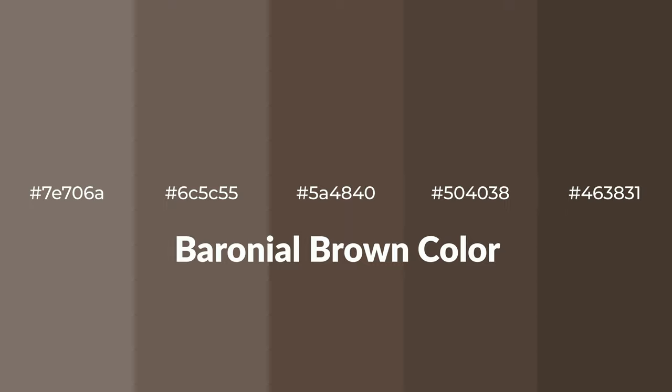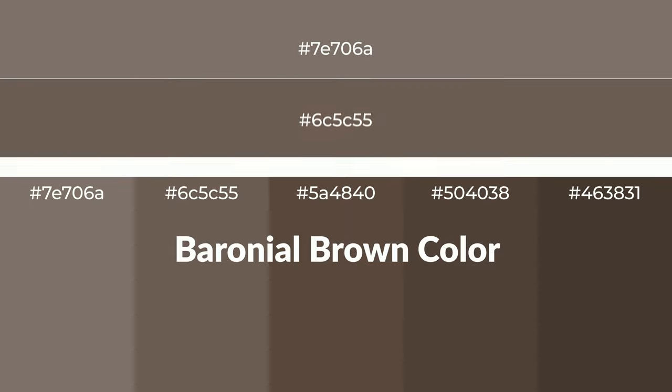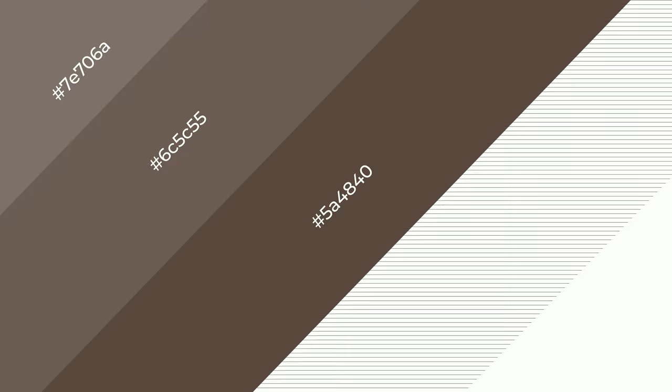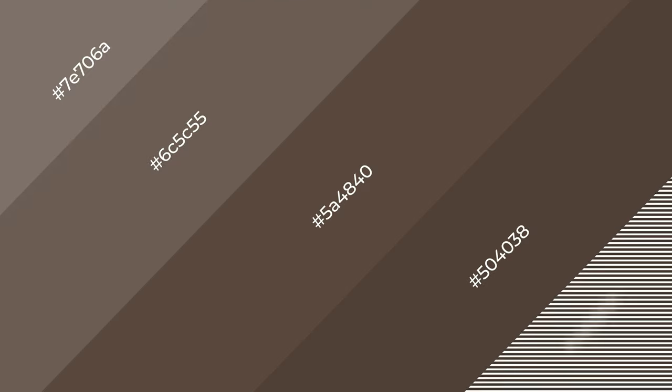Warm shades of baronial brown color with brown hue for your next project. To generate tints of a color, we add white to the color — tints create light and exquisite emotions. To generate shades of a color, we add black to the color, and it is used in patterns, 3D effects, and layers. Shades create depth and drama.